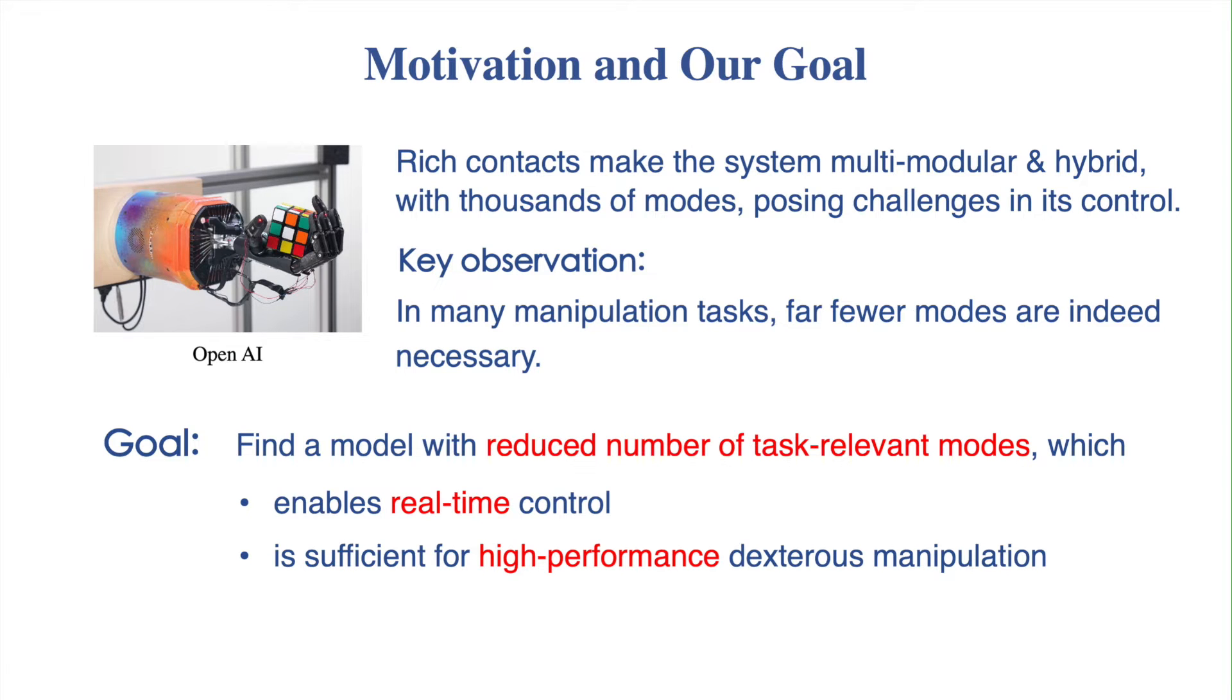The hybrid nature of dextrous manipulations poses significant challenges in its control and planning. Inspired by a key observation that far fewer modes are actually needed in many manipulation tasks, we want to find a reduced-order model requiring only a limited number of task-relevant modes, which enables real-time control and is sufficient for achieving high-performance dextrous manipulation.